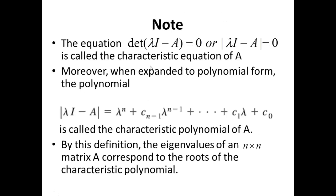The equation det(Lambda I minus A) equals 0 is called the characteristic equation of A. When expanded to polynomial form, det(Lambda I minus A) equals Lambda to the n plus C_(n-1) Lambda to the n-1 plus ... plus C₁ Lambda plus C₀. This polynomial is called the characteristic polynomial of A. The eigenvalues of an n by n matrix A correspond to the roots of the characteristic polynomial.